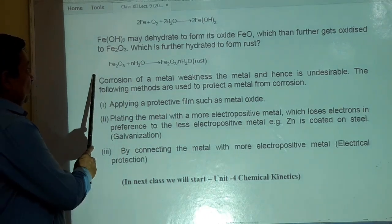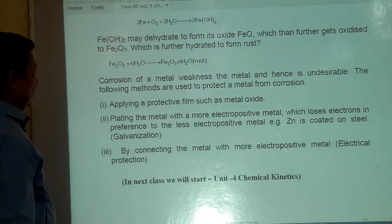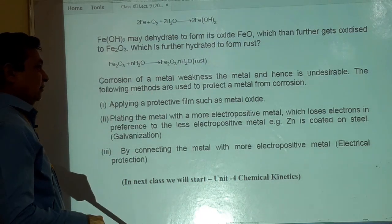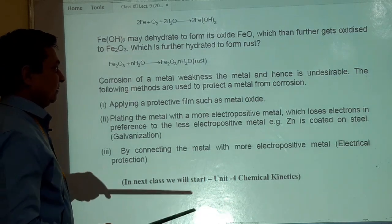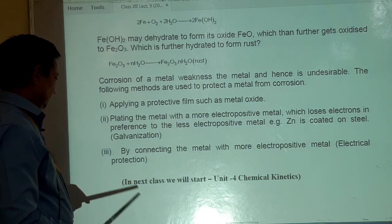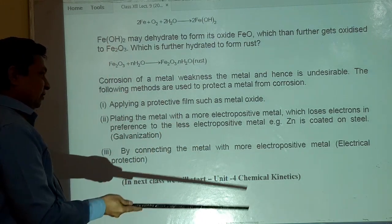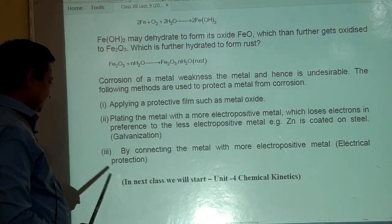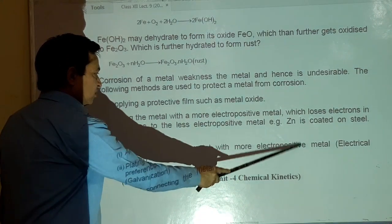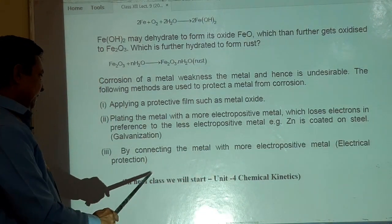जो anode पे oxidation हो रहा था, किसका हो रहा था? Iron का. So, iron पे अगर अपन iron से ज्यादा किसी reactive metal की coating कर देंगे, तो iron को protect कर देगी वो metal और उसका खुद का oxidation हो जाएगा. इसकी जगह अपन magnesium भी ले सकते हैं, क्योंकि magnesium is more reactive than iron. Third है, by connecting the metal with more electropositive, more electropositive means more reactive metal. इसे अपन क्या बोलते हैं, electrical protection.